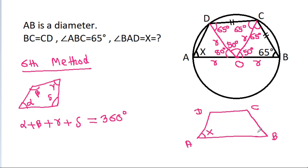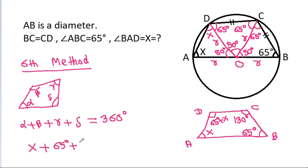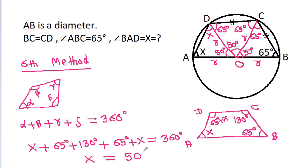This angle is 65 degrees, this angle is 65 plus 65 equals 130 degrees, and this angle is X, so this angle will be 65 plus X. Therefore X plus 65 plus 130 plus 65 plus X equals 360 degrees, confirming X equals 50 degrees.